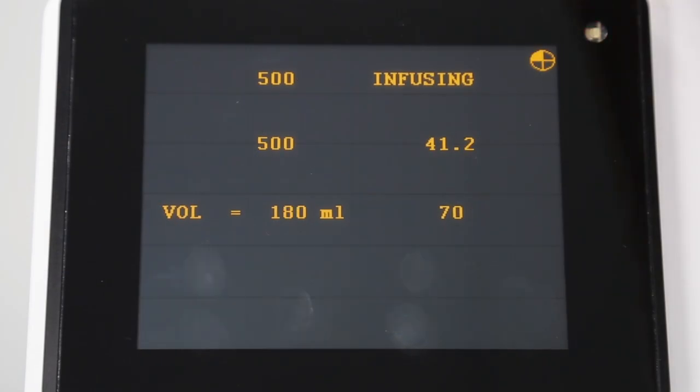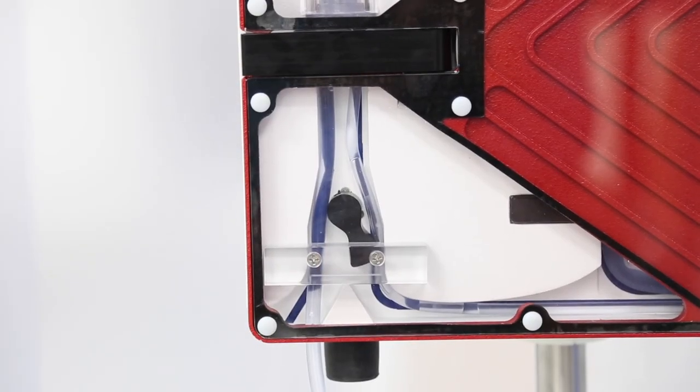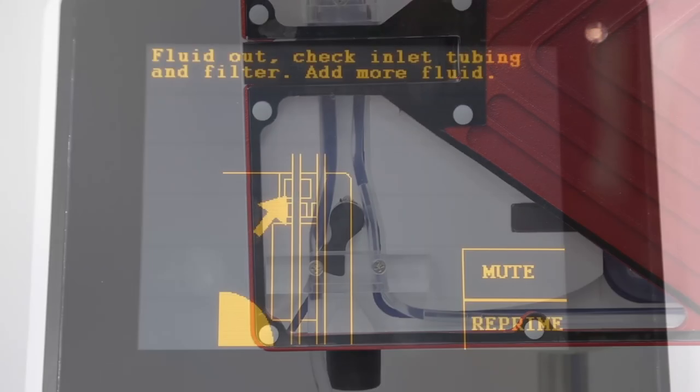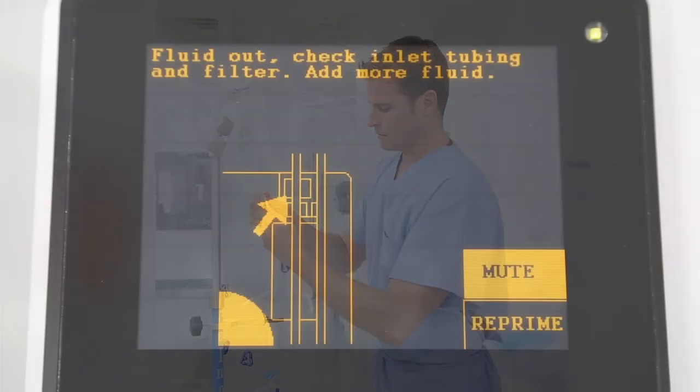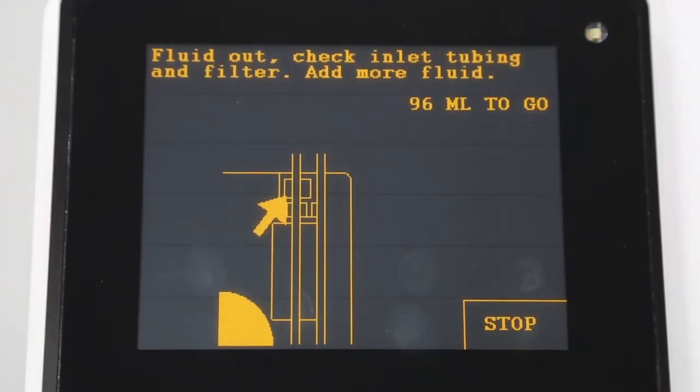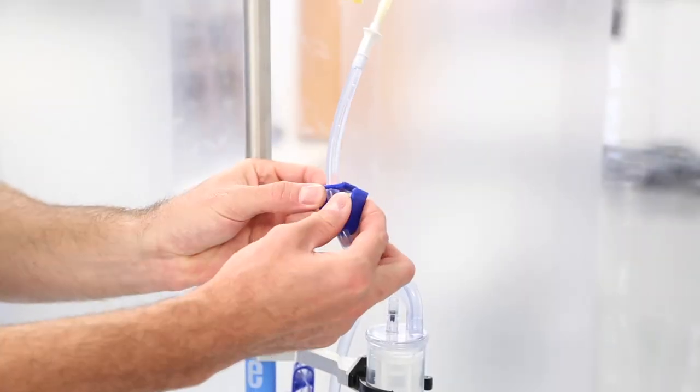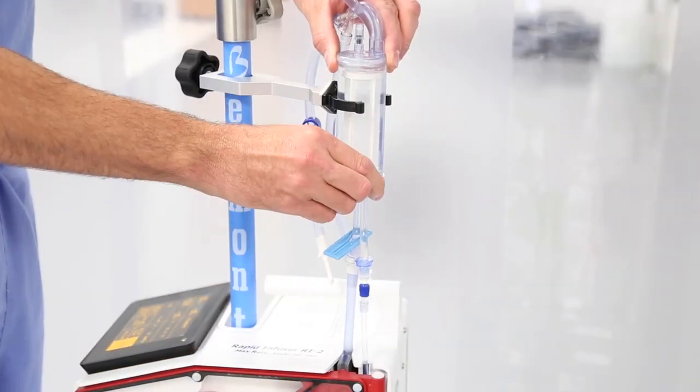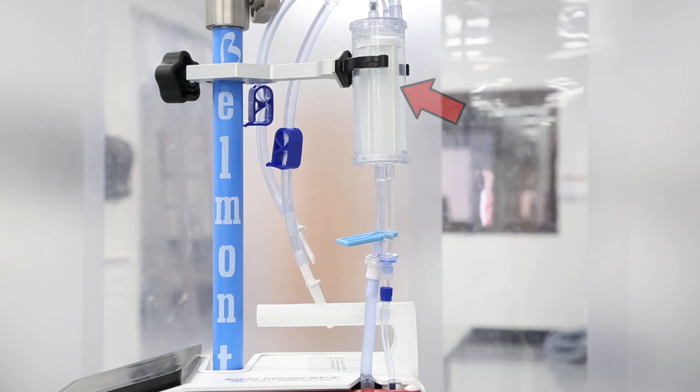A fluid out alarm will occur if the operator allows the system to run out of fluid. The Belmont will immediately stop infusion and automatically clamp off the patient line. Press mute to silence the alarm, add fluids, and press reprime. The system will automatically reprime in 13 seconds. If the fluid bags are not empty, check to make sure they are properly spiked, clamps are open, and the tubing is installed correctly. High amounts of particulates in the blood may clog the coarse blood filter in the reservoir chamber. Replace the reservoir chamber or disposable if it becomes clogged.